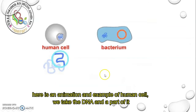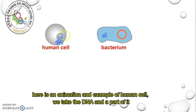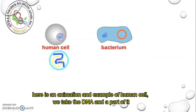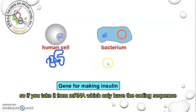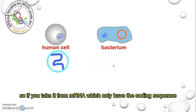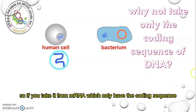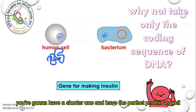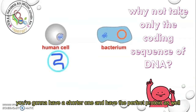Here is an animation — an example of a human cell. We take the DNA and a part of it, but it is very large. So if you take it from mRNA, which only has the coding sequence, you're going to have a shorter sequence, and you're still going to produce the perfect protein.